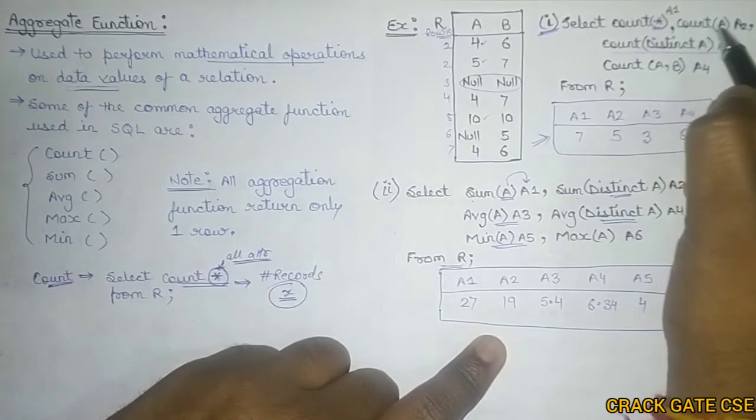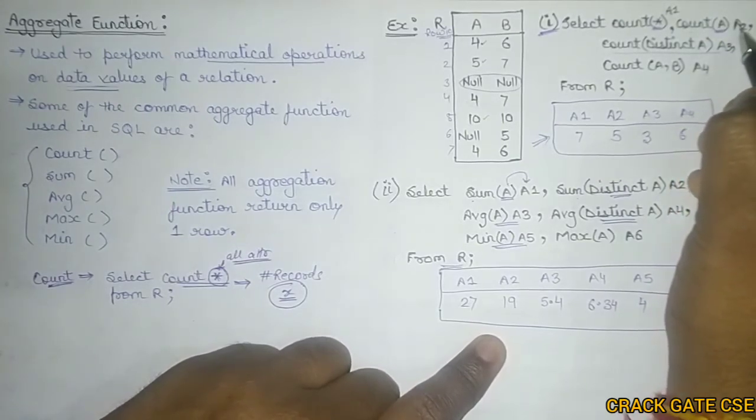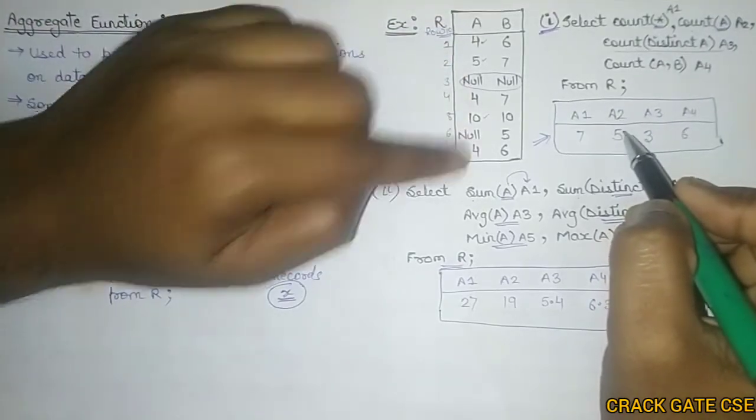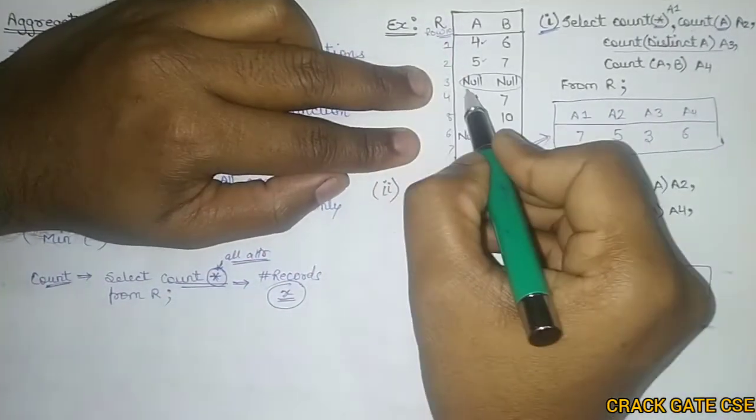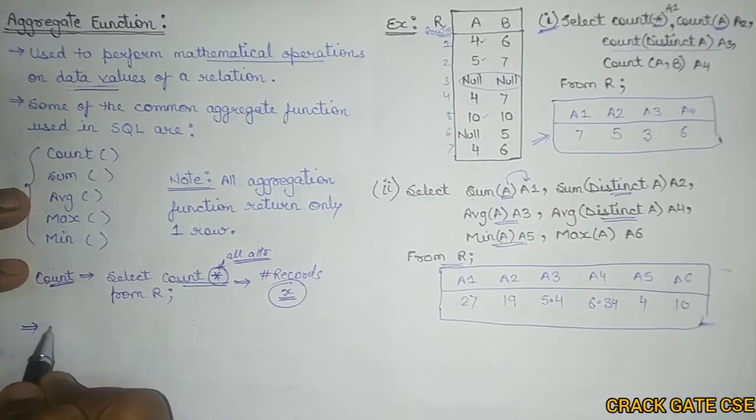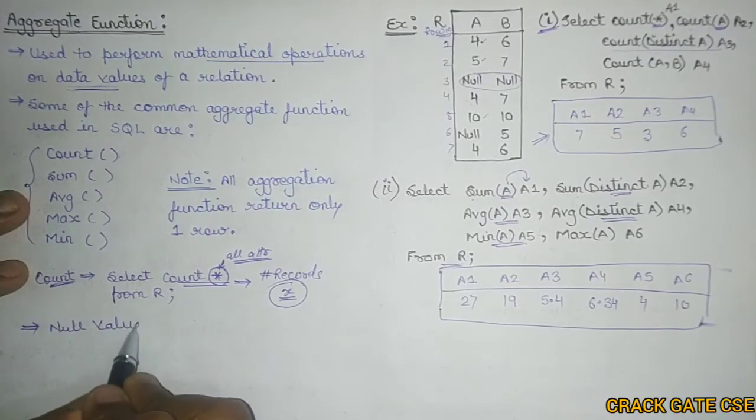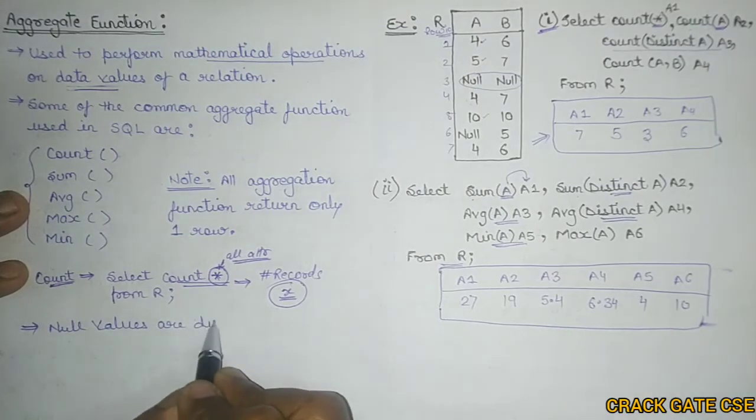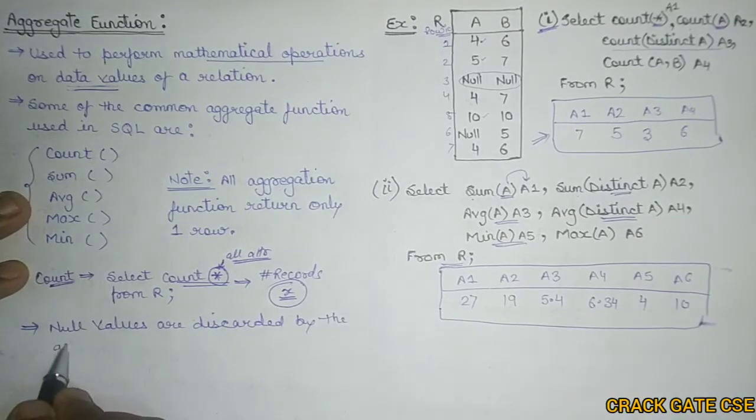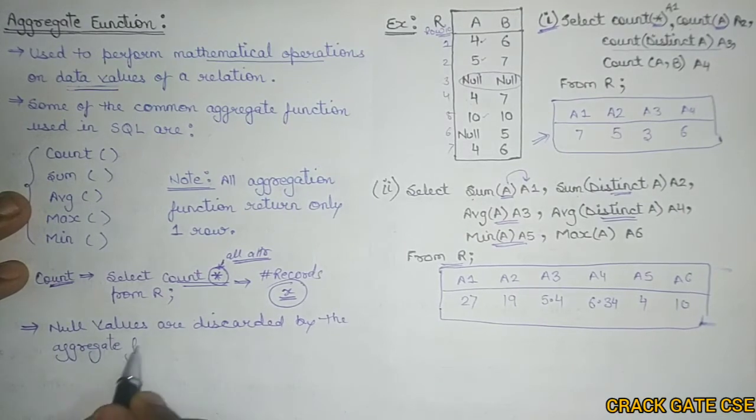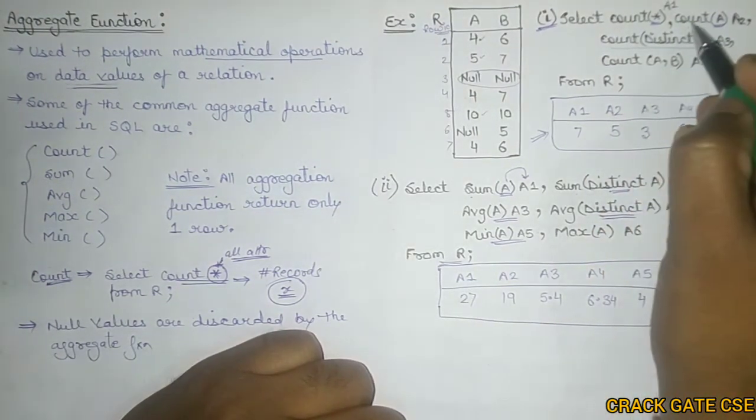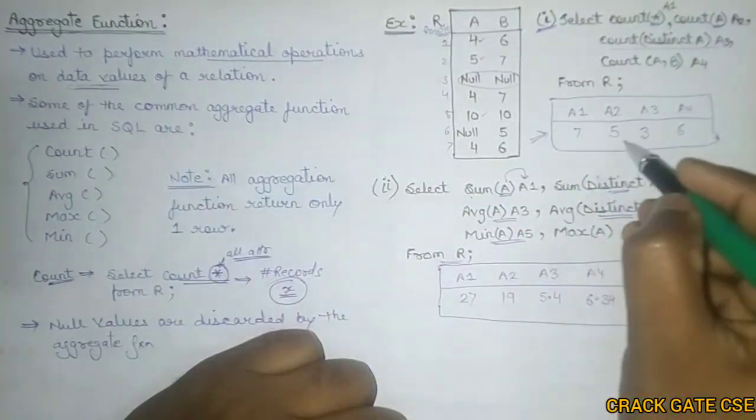Similarly, count A means count number of values in A and place them in A2. So in A2, I am writing the number of values of A: 4, 5, 4, 10, 4. You can see one thing that null values are not considered. The important point is that null values are discarded by the aggregate function. So we count the A values discarding the null values and got 5.